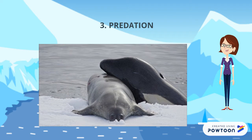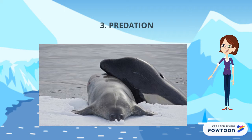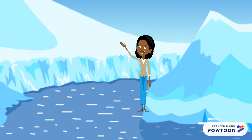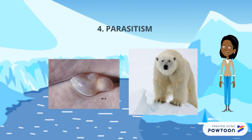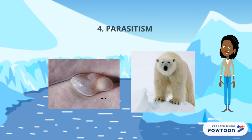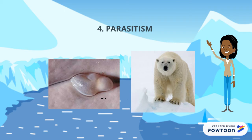Predation. It is an interspecific relationship. It is positive for one species and negative for the other one. A member of one species, the predator, eats all or part of the body of a member of another species, the prey. Example: orca eating a seagull. Parasitism is an interspecific relationship. It is positive for one of the species and negative for the other one. It is a long-term close association between two species in which one benefits and the other is harmed. Example: liver tapeworm living on polar bears.